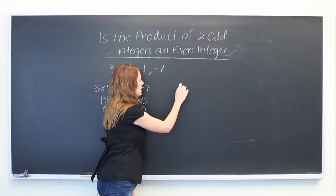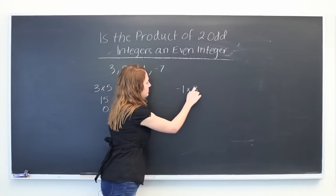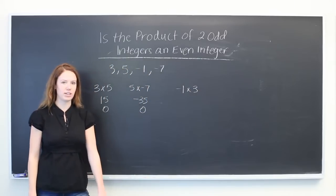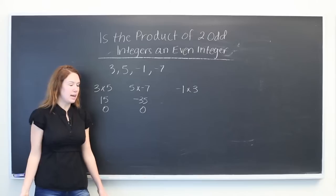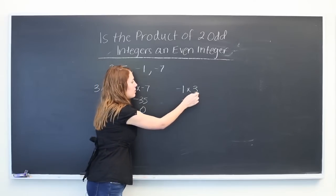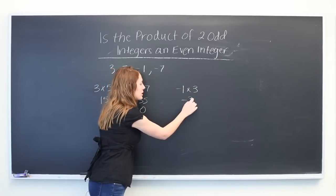Let's look at minus 1 times 3. The signs again are different here, so our answer will be negative. 3 times 1 will give us 3.